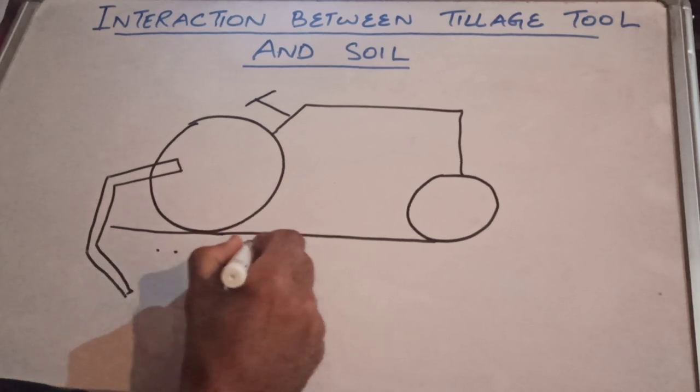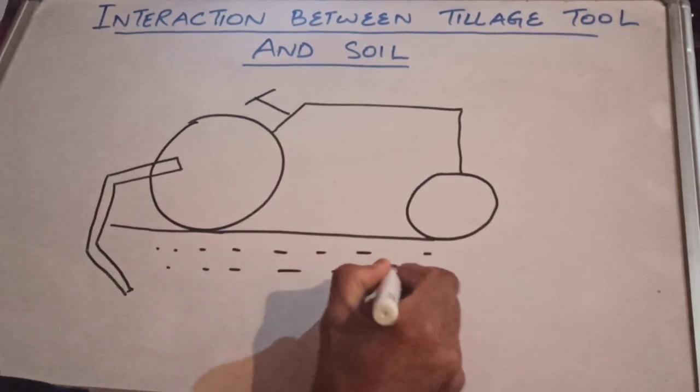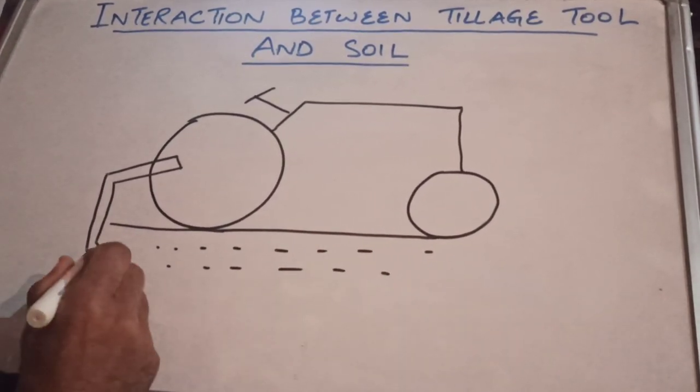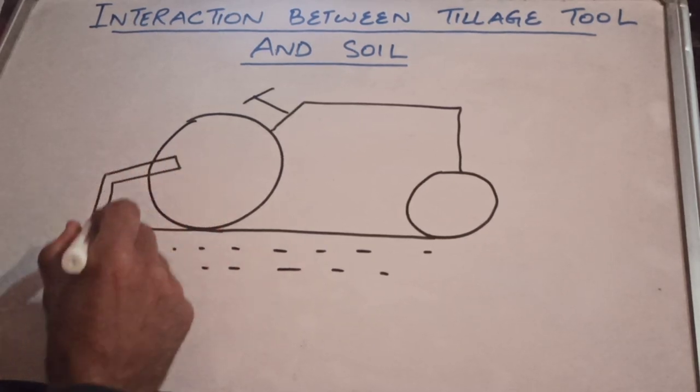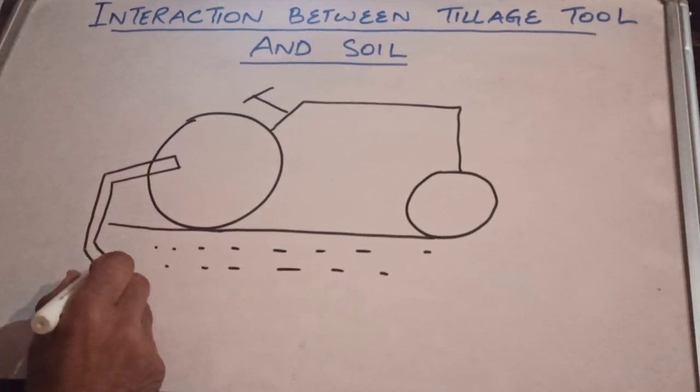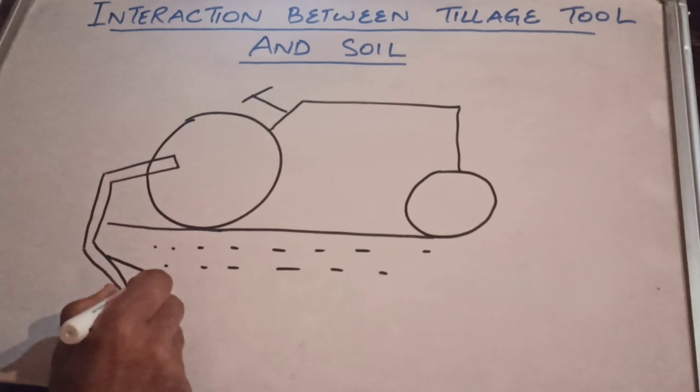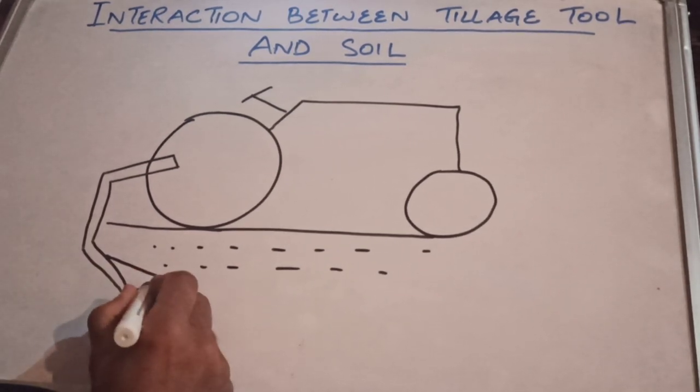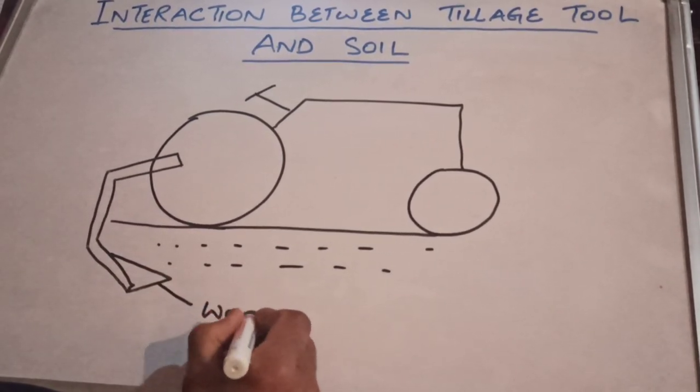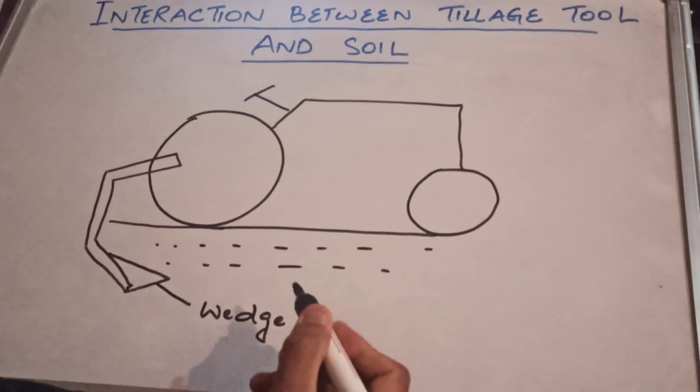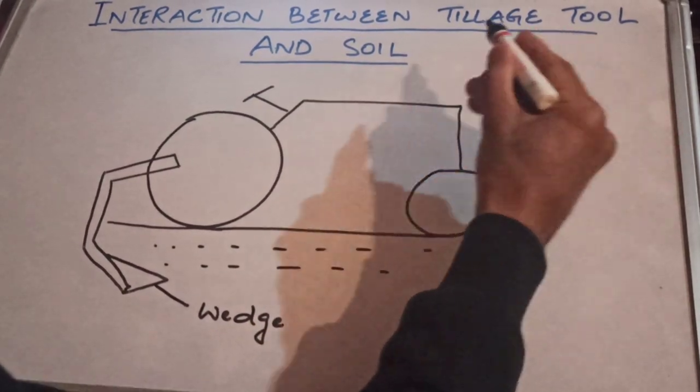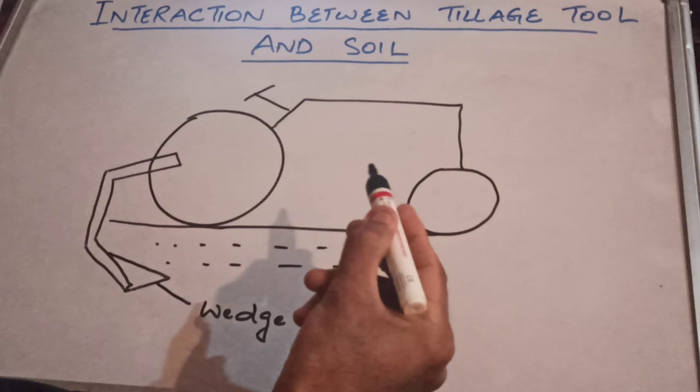What we are talking about is the interaction between the lower part of your tillage tool and the soil. Here at the bottom we usually place a wedge, usually a triangular shaped wedge. So the interaction between tillage tool and soil can be conceived as the interaction between wedge and the soil.